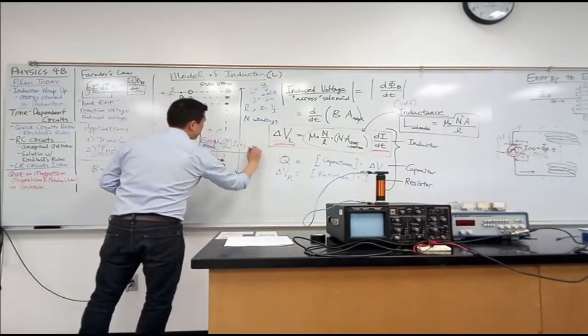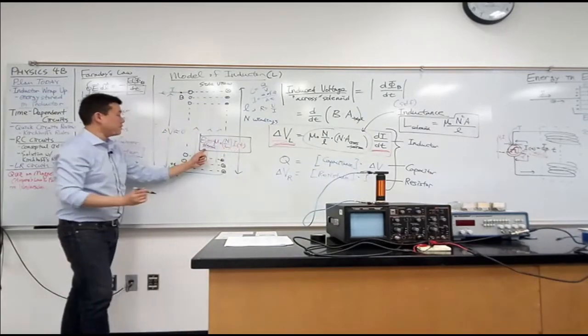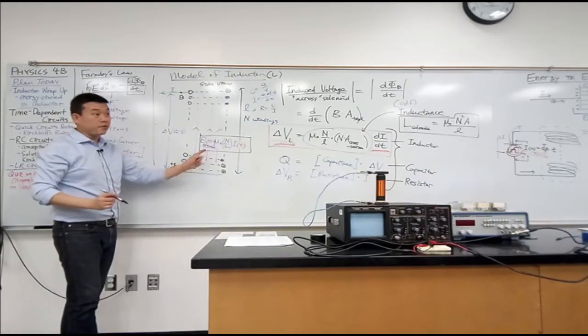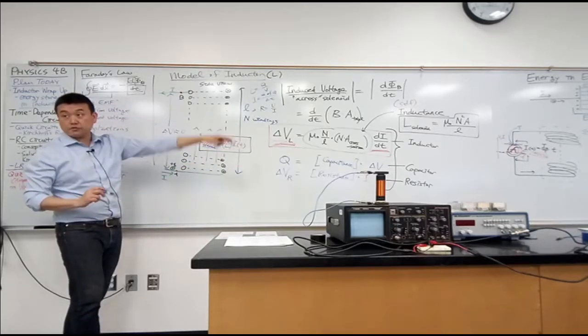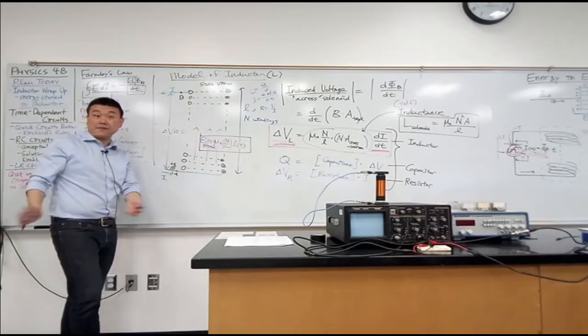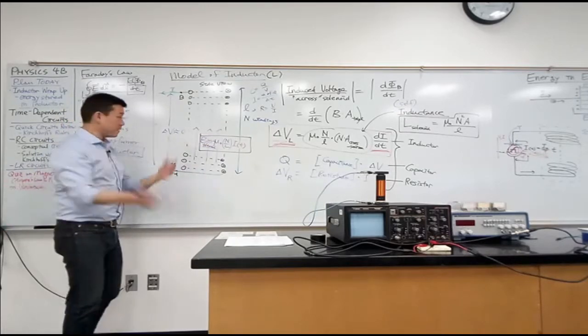So I'm going to try to do the same thing here. I have this relationship between the current and the magnetic field. So I'm going to try to say, let's solve this for the current and plug it in there. Try to get everything in terms of magnetic field instead of current. Let's see what happens.